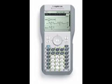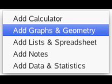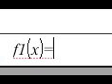First thing we're going to do is open up a new document and add a graphs and geometry page to that document. Then down the bottom you'll see F of 1X come up.